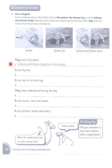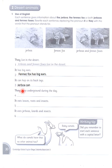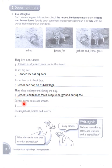They live in the desert — we replace 'they' to get: Jarboas and fennec foxes live in the desert. It has big ears — Fennec fox has big ears. It can hop on its back legs — Jarboa can hop on its back legs. They sleep underground during the day — both creatures — so we write: Jarboas and fennec foxes sleep underground during the day.